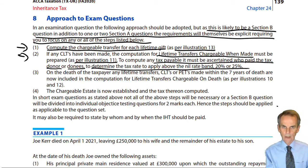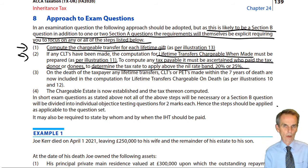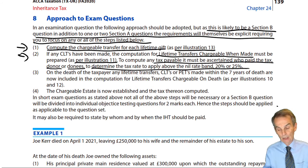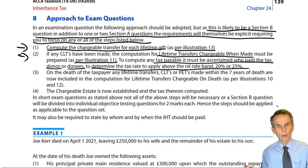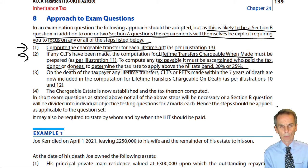Who pays determines whether it's going to be 25% for the donor paying or 20% if the trustees are paying. You may be explicitly told. If you weren't explicitly told in relation to such a CLT, then you make the assumption that it was the donor that paid. Because if the trustees are to pay, they have to elect — they'll be instructed so to do by the donor — and they would be electing to make the payment out of the trust fund. So if there's no comment about any such election, we assume there was no such election, and therefore it is the donor that will pay, at a 25% rate on the excess above the nil rate band.